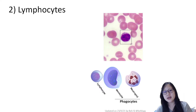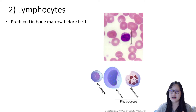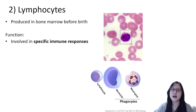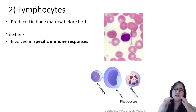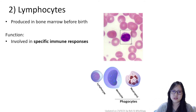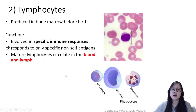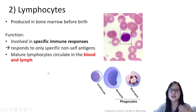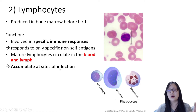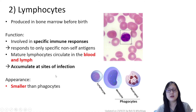Now let's talk about lymphocytes. Lymphocytes are also produced in the bone marrow but only before birth, not throughout life. They are involved in specific immune responses — each lymphocyte specifically targets a particular pathogen. They circulate in the blood and lymph, which is how they get their name, and when there is an infection they accumulate at the site.